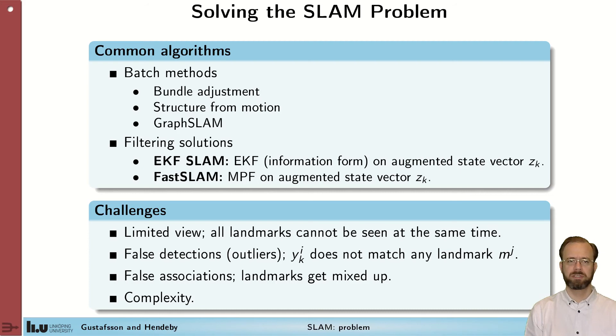What we study more in detail in this course are the filtering solutions. There are many of them, but two prominent ones that we will discuss and that will get attention from a separate module each are the EKF SLAM, where we use an extended Kalman filter either on the normal form or information form to solve the SLAM problem, and FastSLAM, which is more or less the application of a marginalized particle filter to the SLAM problem.